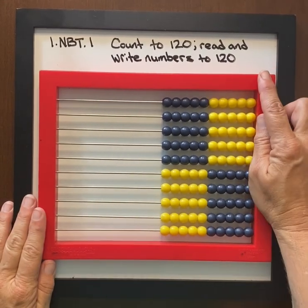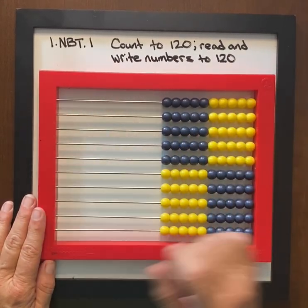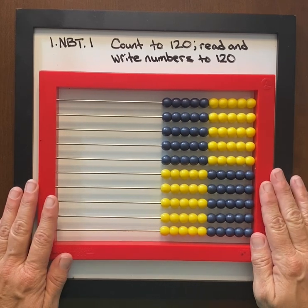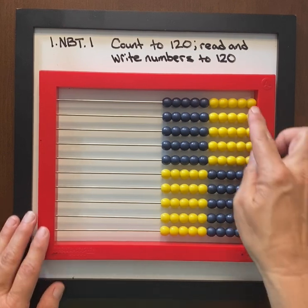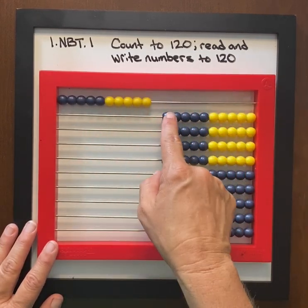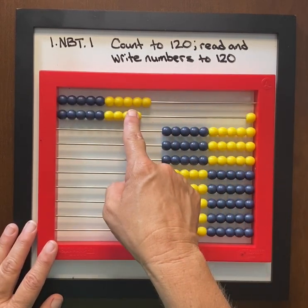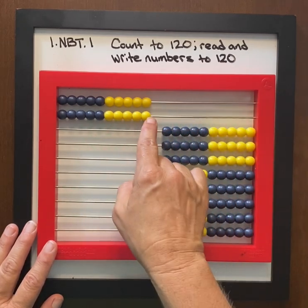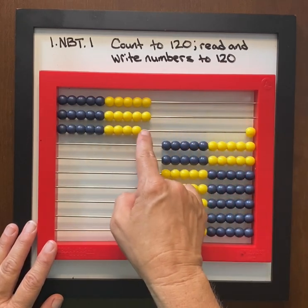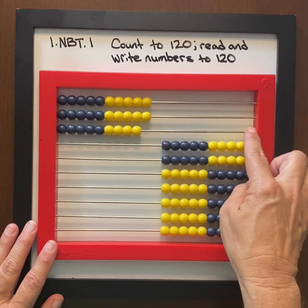When we're counting to 120 with the standard 1.NBT.1, oftentimes students struggle from moving from one decade number to the next. So here we have 10 and then we have 19, 19 going to that next decade, 20. Here's another example, 29 to 30.